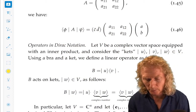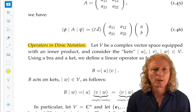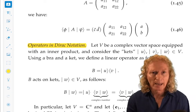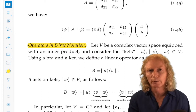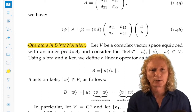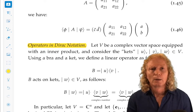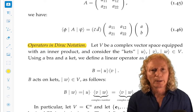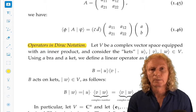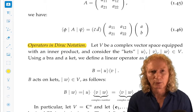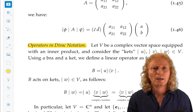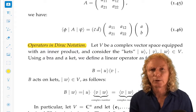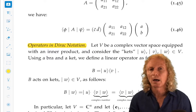So, operators in Dirac notation. Remember what an operator is — an operator acts on a vector in a complex vector space equipped with an inner product. It acts on a vector and gives you another vector. We saw in the last lecture that vectors are described as kets, and we have a funny notation for them. We talked about taking their inner product with other vectors, which were bras. But now we're going to use bras and kets in a different way to make operators.